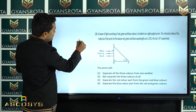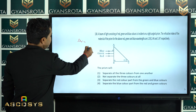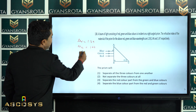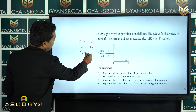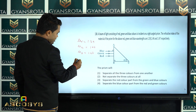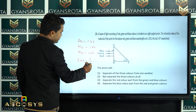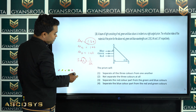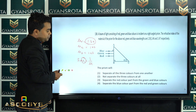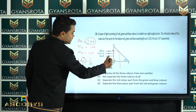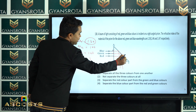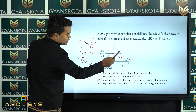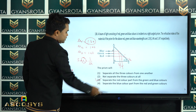Using sin(Ic) = 1/n, the critical angle is largest for red color (n = 1.39), so red will not undergo total internal reflection and will pass through. Green (n = 1.44) and blue (n = 1.47) will undergo total internal reflection. Therefore, the correct option is 3: the prism will separate the red color from the green and blue colors.